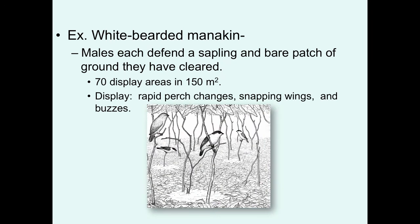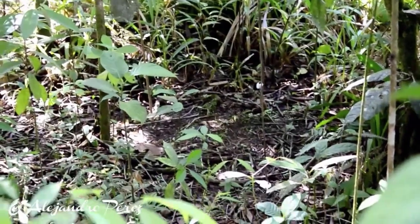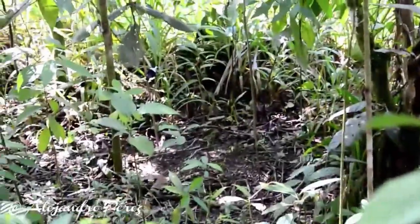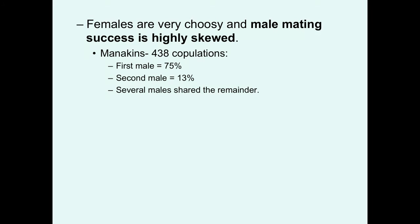An example is white-bearded manakins. Males each defend very small territories including a sapling and cleared bare ground patches. There can be as many as 70 display areas in 150 square kilometers. Males perform complex displays including rapid perch changes, wing snapping, and buzzes to convince visiting females to choose them over rival males at the lek. Females are very choosy and male mating success is highly skewed, with a few males getting the majority of copulations.